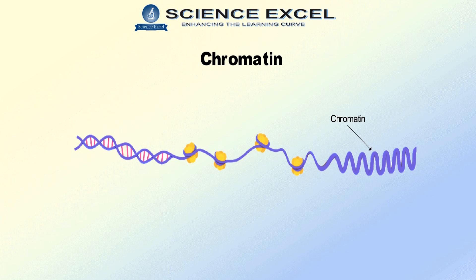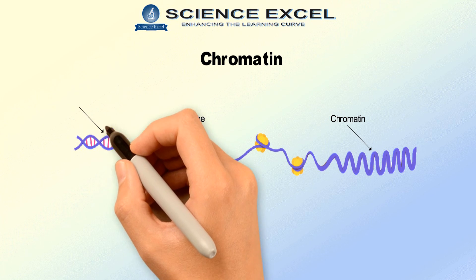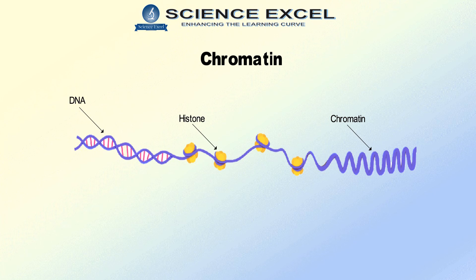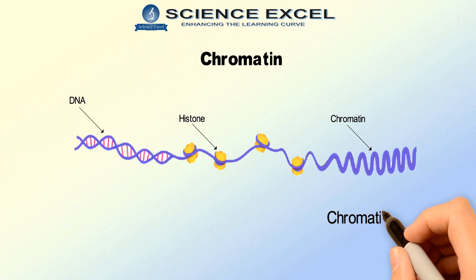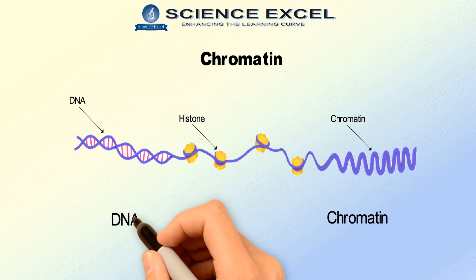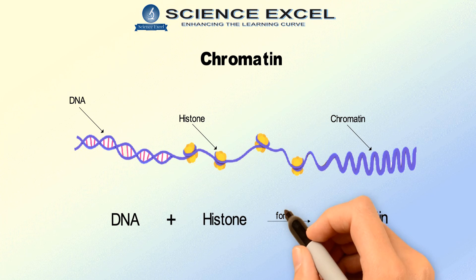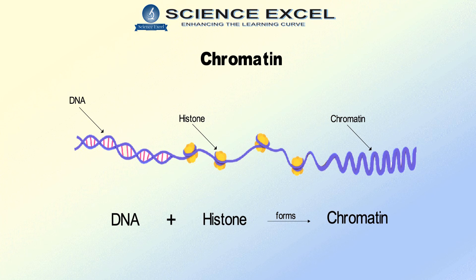The chromatin appears to have a bead-on-string arrangement. These beads are made up of proteins called histone, and the strings are the DNA molecule wrapped around the histone. So chromatin is a complex macromolecule composed of DNA and histones, which are found inside the nucleus of a cell.